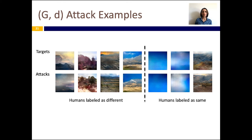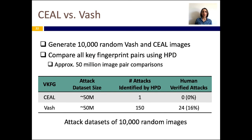Here are some of the attack samples we generated along with the human annotation. We also compared SEAL against VASH under a general collision attack. For this, we generated 10,000 VASH and 10,000 SEAL images using random keys, then paired each image in each set with all the other images in the set. We used HPD to identify potentially same-looking samples and evaluate those samples using human subjects. HPD classified 150 VASH and only one SEAL image pair as same. When we labeled these image pairs using human annotators, 16% of the 150 VASH image pairs were labeled as same, but not the single SEAL image pair.